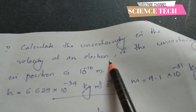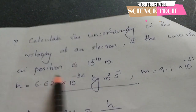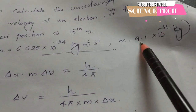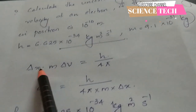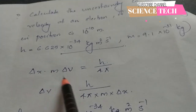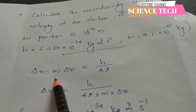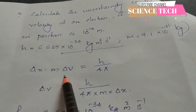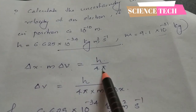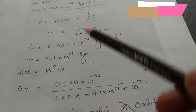For example, if we calculate the uncertainty in velocity of an electron, and the uncertainty in position is given as 10 raise to minus 10 meters, we use delta x times m delta v is greater than or equal to h by 4 pi to solve it.